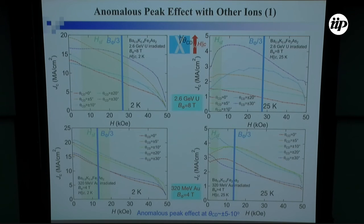Then I wanted to confirm what happens if we change the ion species. I showed you the case of uranium, 2.6 GV uranium.